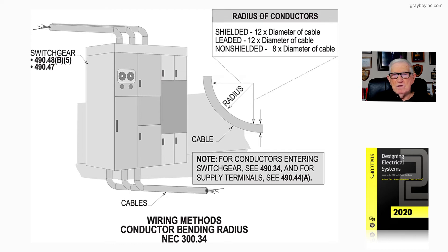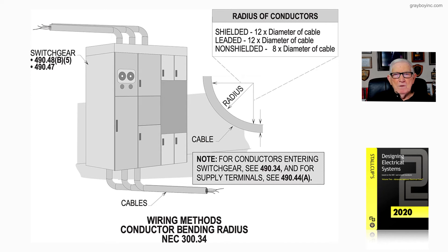Non-shielded cables are just 8 times the diameter of the cable. Now, these potheads — just one time in my career did I ever have to use lead, solder it, and build up a stress comb around the shields coming into these insulators. It took a little while to get the hang of it. This gives you the bending radii so that you don't damage the shield or the lead, and non-shielded requires less because you're not dealing with a shield or lead.